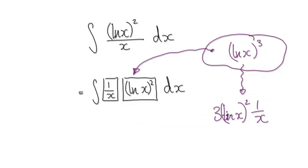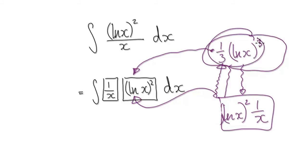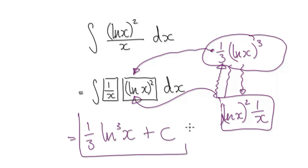This thing here is exactly the same as this — we just don't want this 3. So go back to your initial guess and stick a third in here, so that when you differentiate it, it negates that 3. When you differentiate this, it gives you this thing here, which is the same as this up here. So the final answer is one third · (ln x) to the power of 3, plus c. This is your final answer.